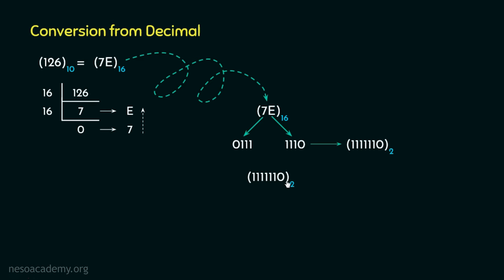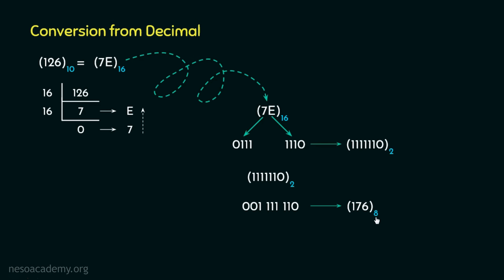Using this binary value and grouping 3 bits from the LSB to MSB — appending extra zeros to the most significant group where needed — we produce the equivalent octal value 176, because 110 is 6, 111 is 7, and 001 is 1 in octal.